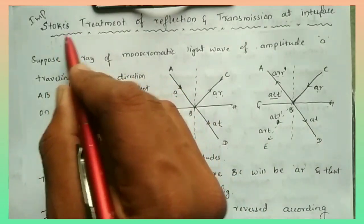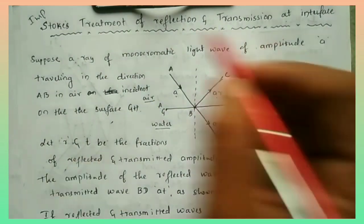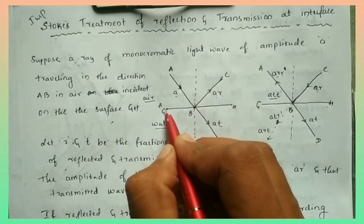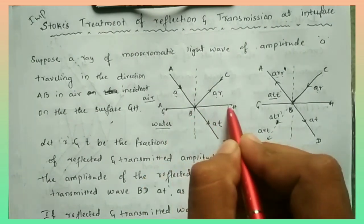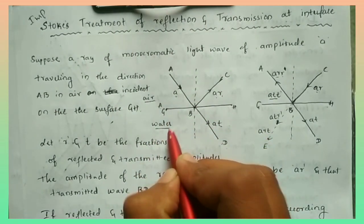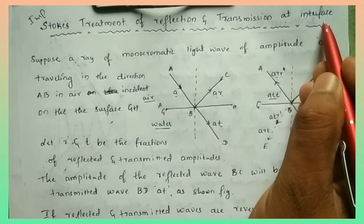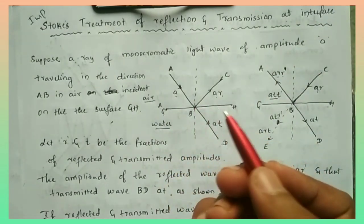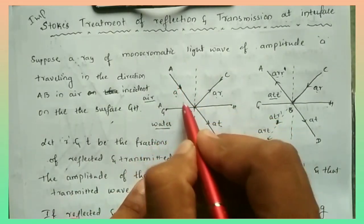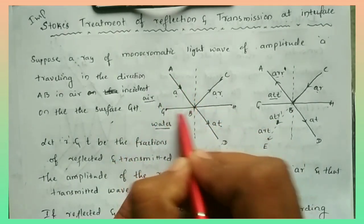The next important concept is Stokes' treatment of reflection and transmission at an interface. The interface GH is the boundary between two media — here, air and water. A ray of light AB is incident on the interface GH.